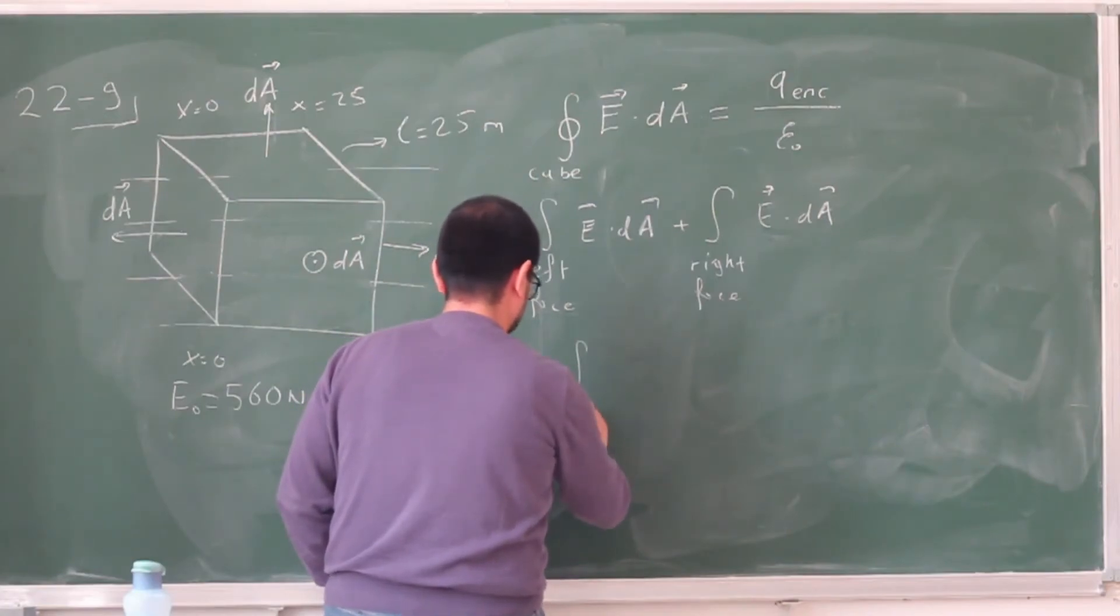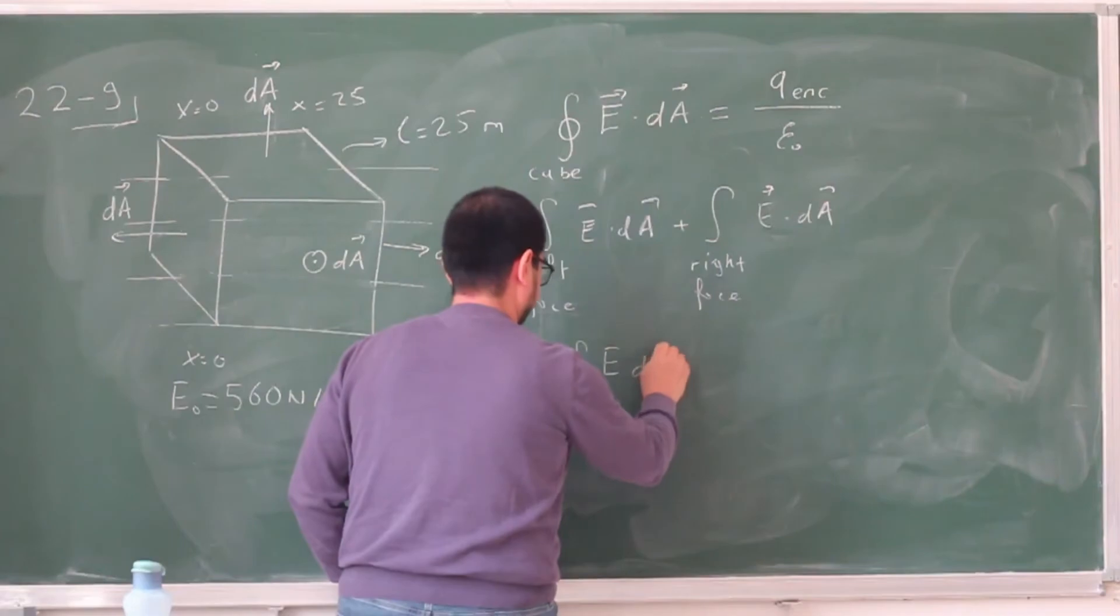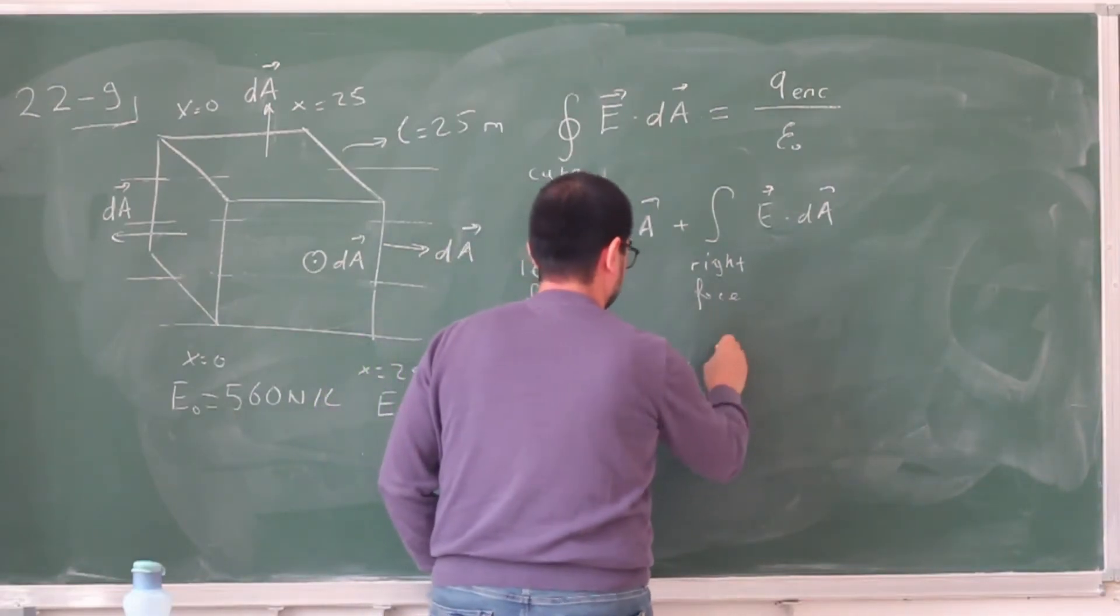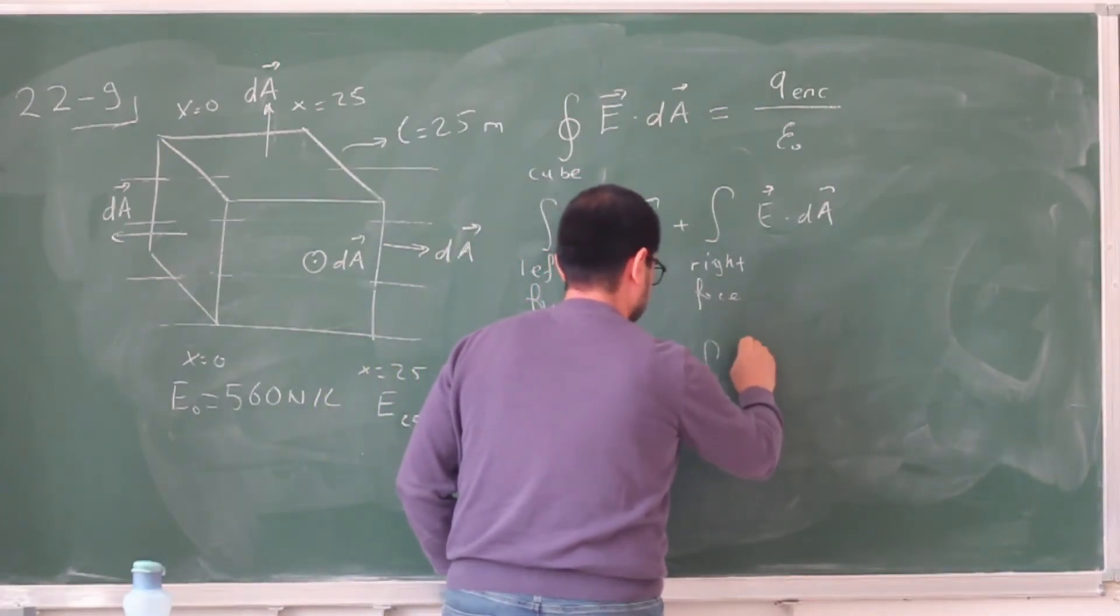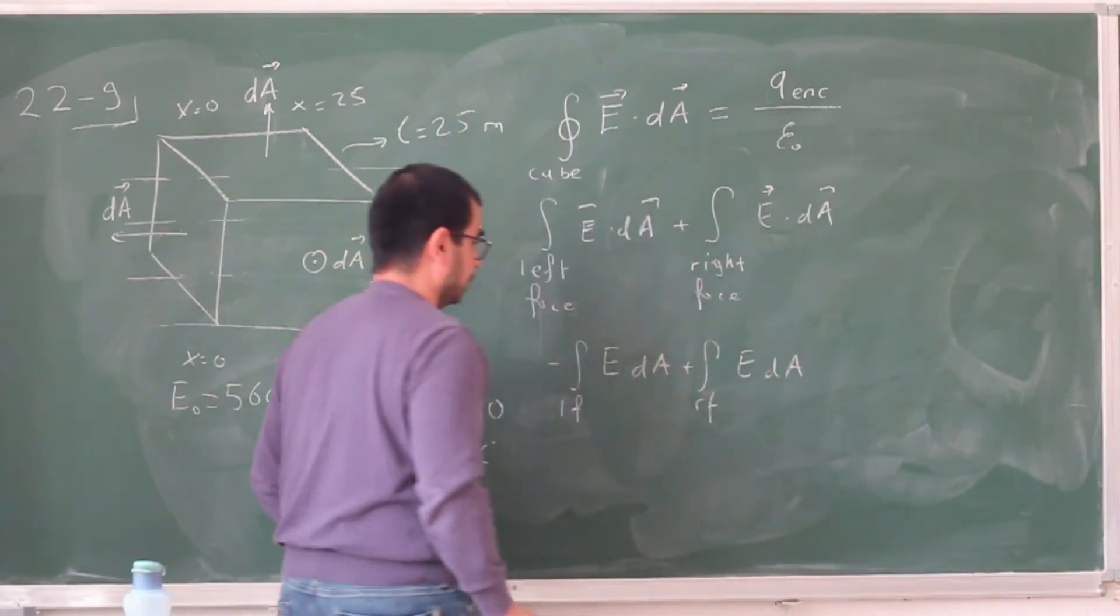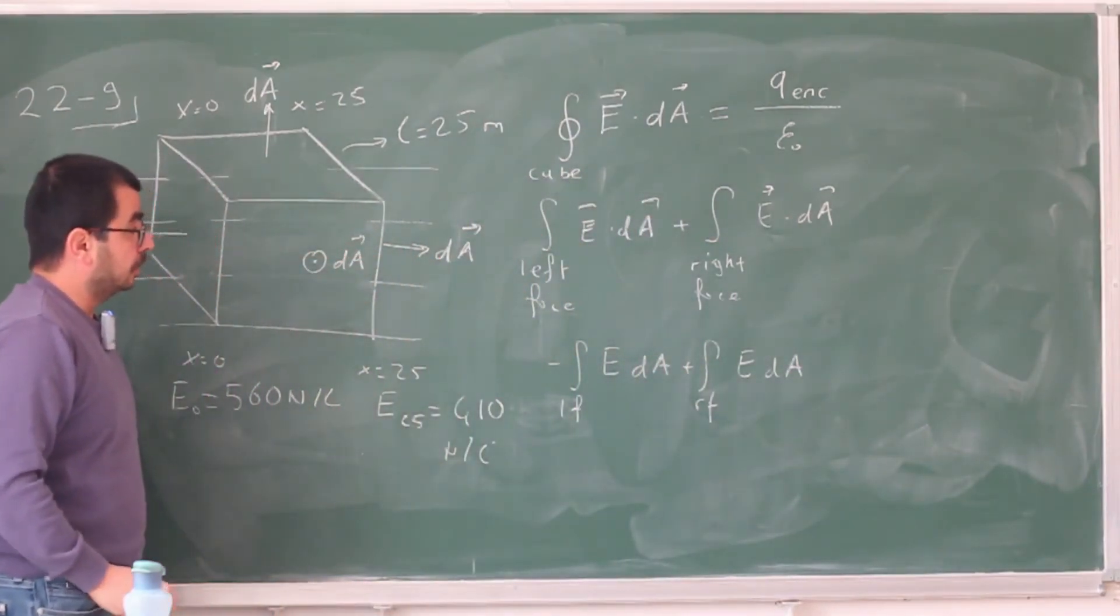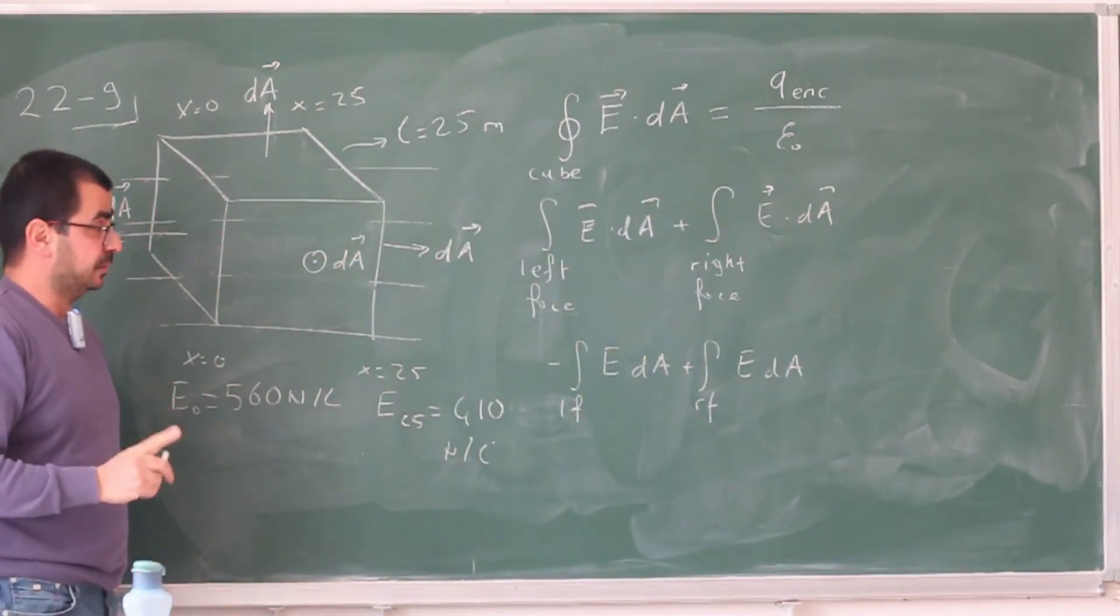So again, for the left face, this is a minus E dA. And then, for the right face, this is just E dA. All right. Now, we can do one more simplification.